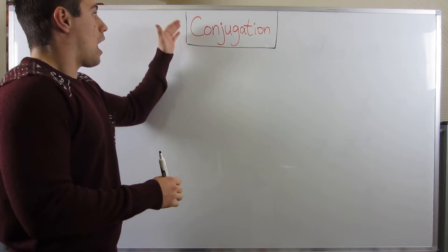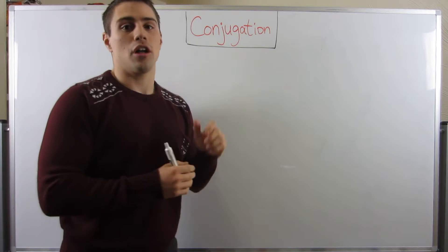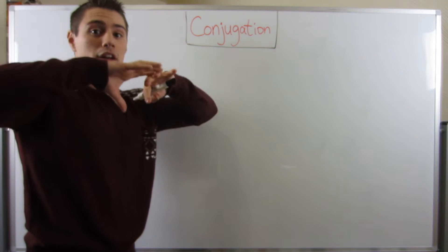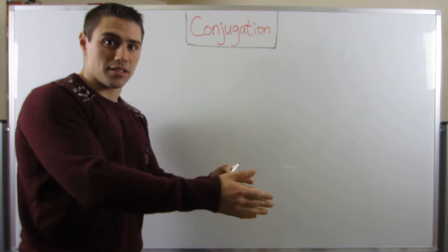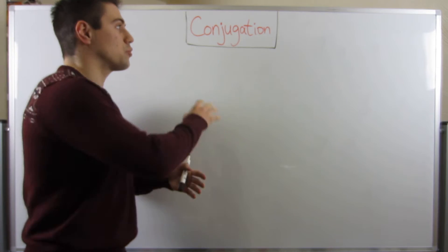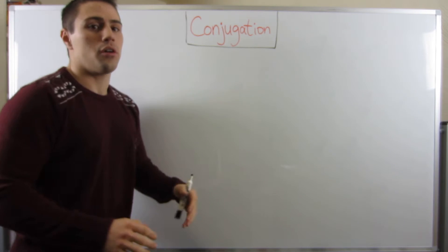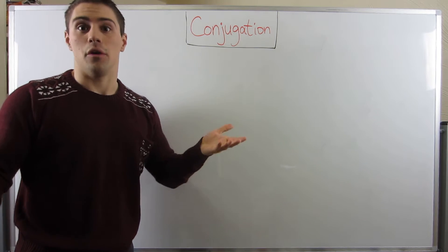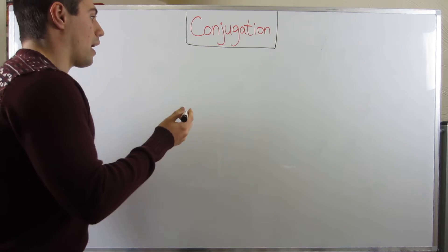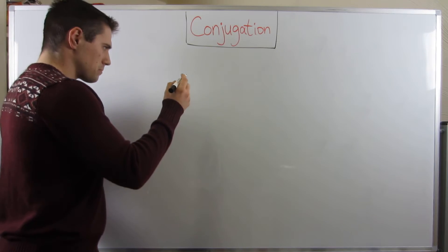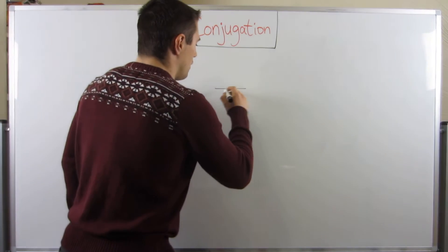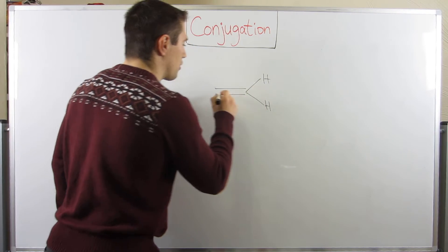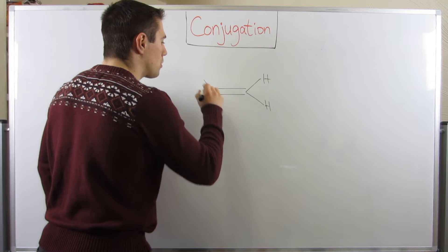Today I want to introduce the topic of conjugation, because we're going to dive into the bigger arena of conjugated systems. But I just want to talk about conjugation in this video — nothing too overwhelming in the first video of O Chem 2. So I want to quickly review what a pi bond is, and I'm going to throw up ethene on the board.